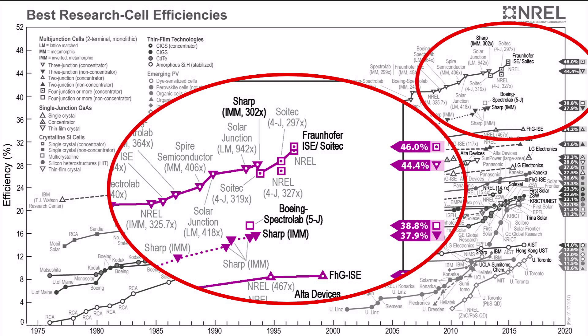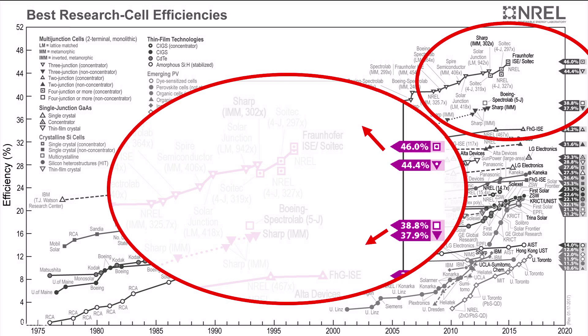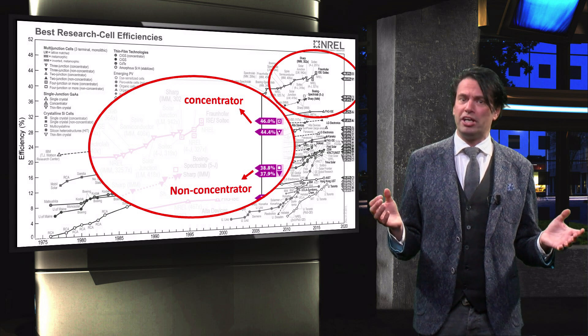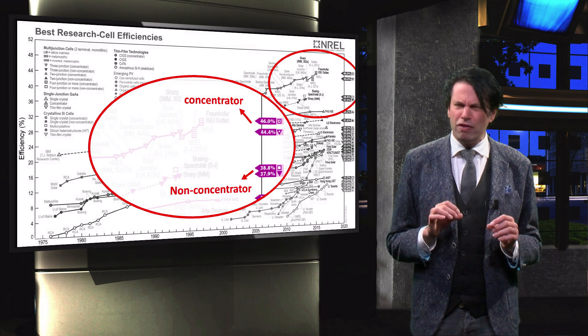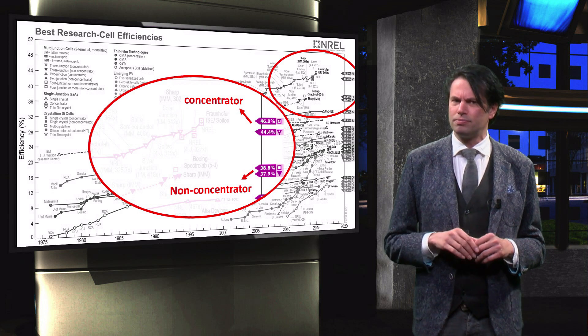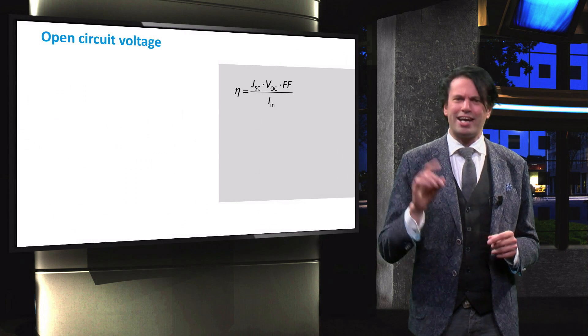As we well know, the efficiency is equal to the power output of a solar cell divided by the power incident on the solar cell. This means that under 2-sun illumination, the power output of a 3-5 solar cell more than doubles. Let's see how that happens.